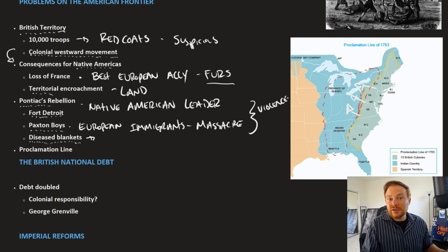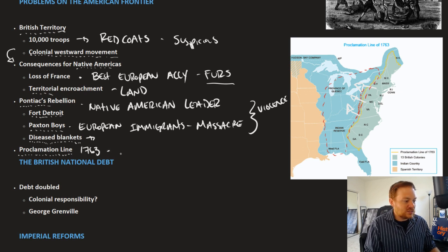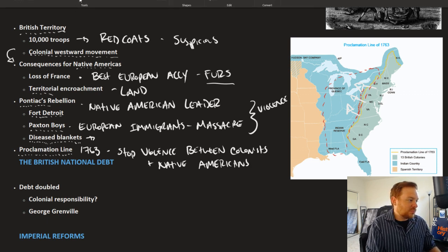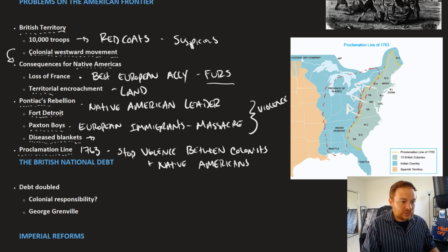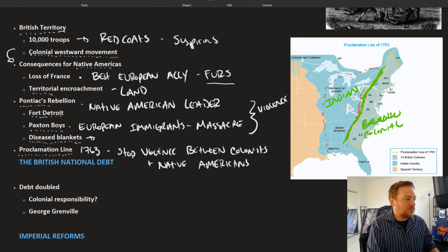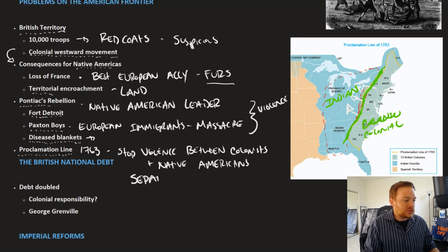This level of violence was not desired by the British, and so the solution to this problem is the Proclamation Line of 1763. What it seeks to do is stop violence between colonists and Native Americans. It creates a barrier — we'll use green here — between the lands that belong to the colonists and the lands that belong to Native Americans. The British essentially set aside Indian territory on one side and colonial territory on the other, seeking to separate the two sides.